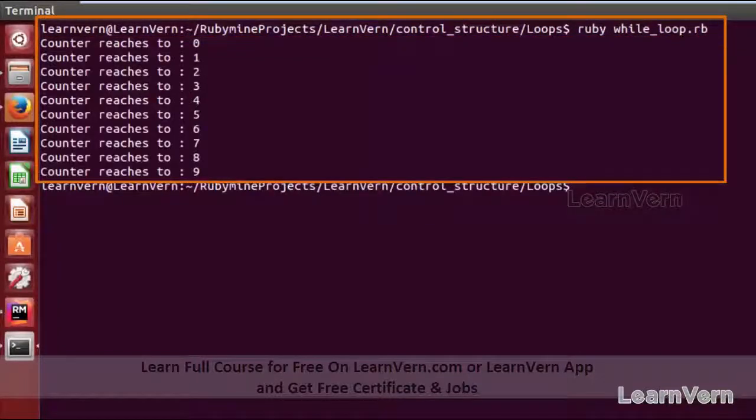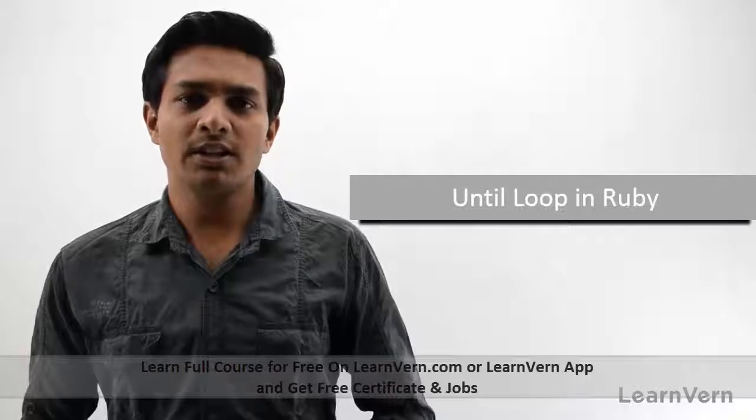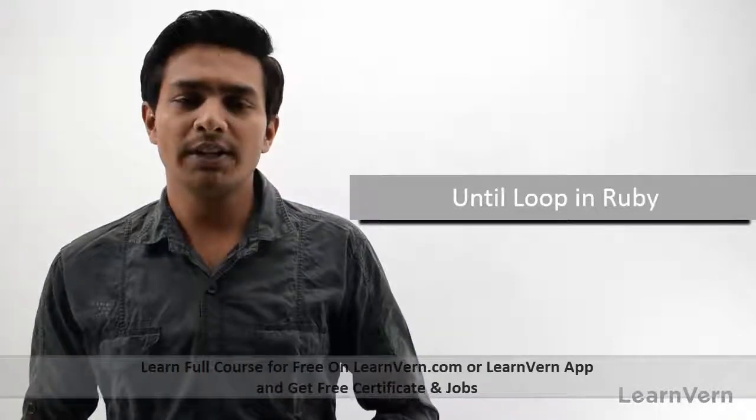And it will execute from 1 to 9. In the next lecture we will learn about until loop in Ruby.